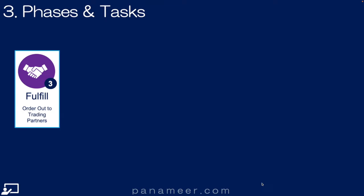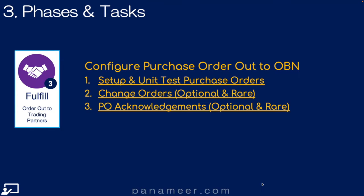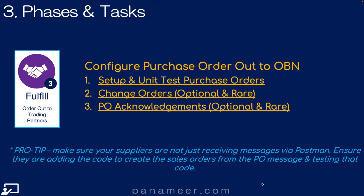Step 3: The Fulfill step. The goal is to configure POs out from Oracle Cloud to OBN. Here are the major tasks. Pro tip: make sure your suppliers are not just receiving the messages via Postman — ensure they've added the code to inbound the PO message and create the sales order, or you'll have problems later.